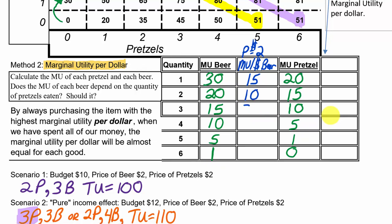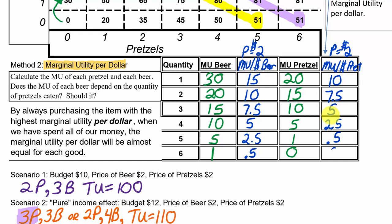So 20 divided by 2 is 10; 15 divided by 2 is 7.5; 10 divided by 2 is 5; 5 divided by 2 is 2.5; and 1 divided by 2 is 0.5. We need to do the same thing for pretzels when the price of pretzels is also $2. Dividing by 2, we get: 10 happiness per dollar, 7.5 per dollar, 5 per dollar, 2.5 per dollar, 1.5 per dollar, and zero.